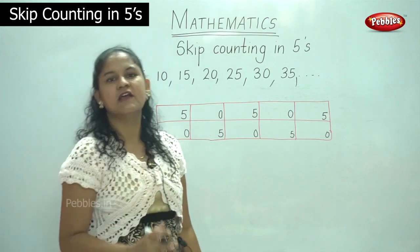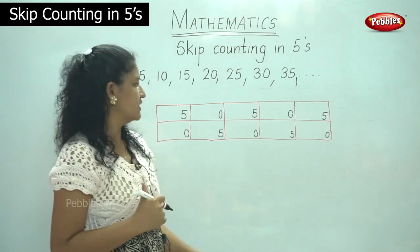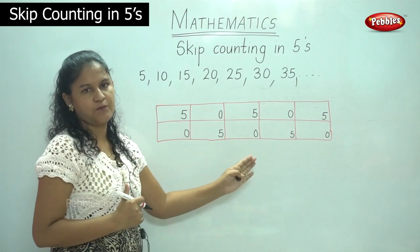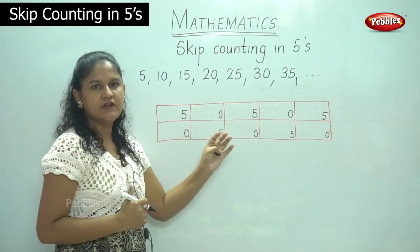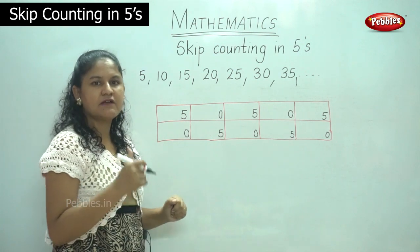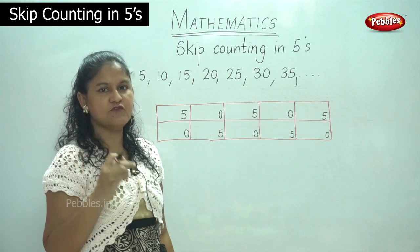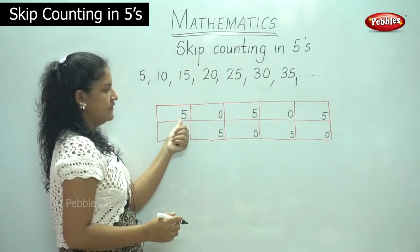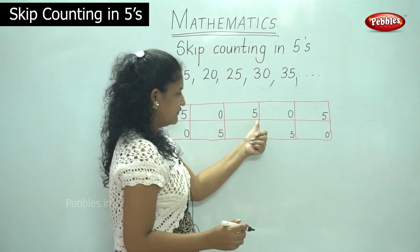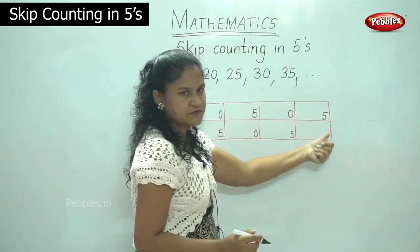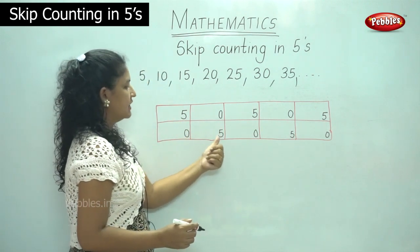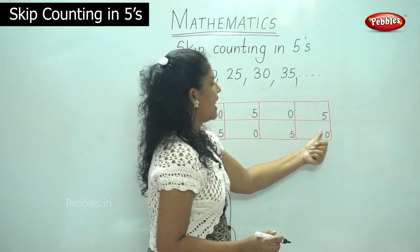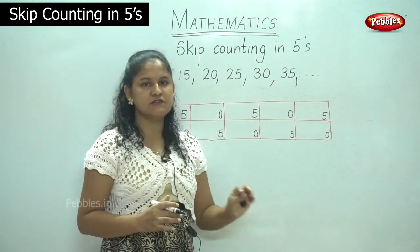Are you listening children? I will explain this again once more. So we draw a 5 by 2 row and column grid — 2 rows and 5 columns — and we write the ones place following this pattern. In the first column 5, in the second 0, in the third 5, in the fourth 0, in the fifth 5. Come down: 0. In the seventh position 5, in the eighth column 0, in the ninth column 5, and in the last column 0. So I hope you have understood that.